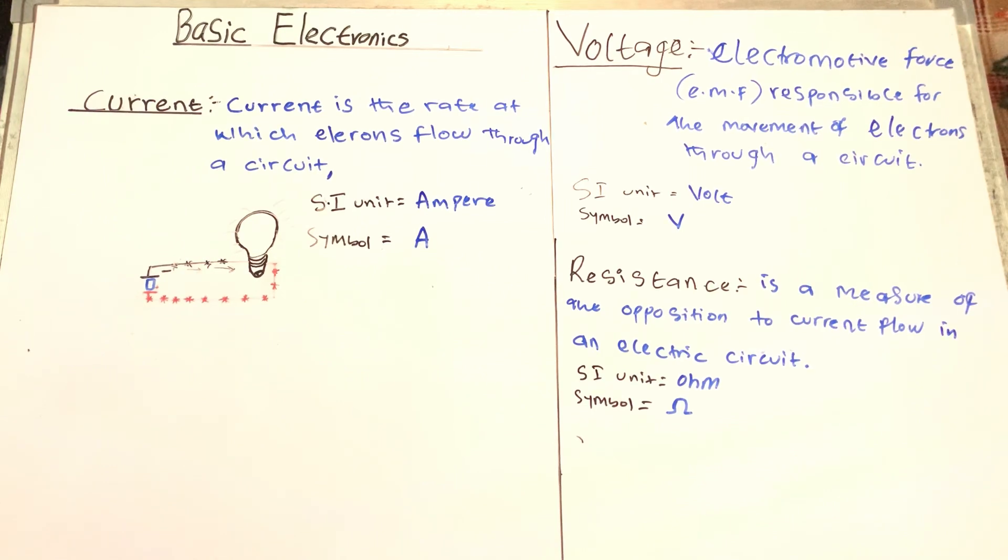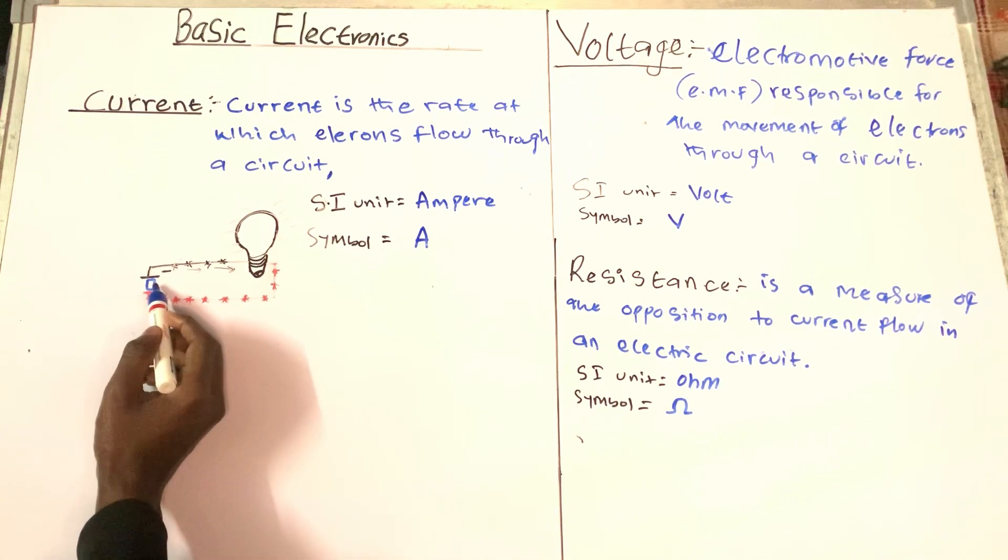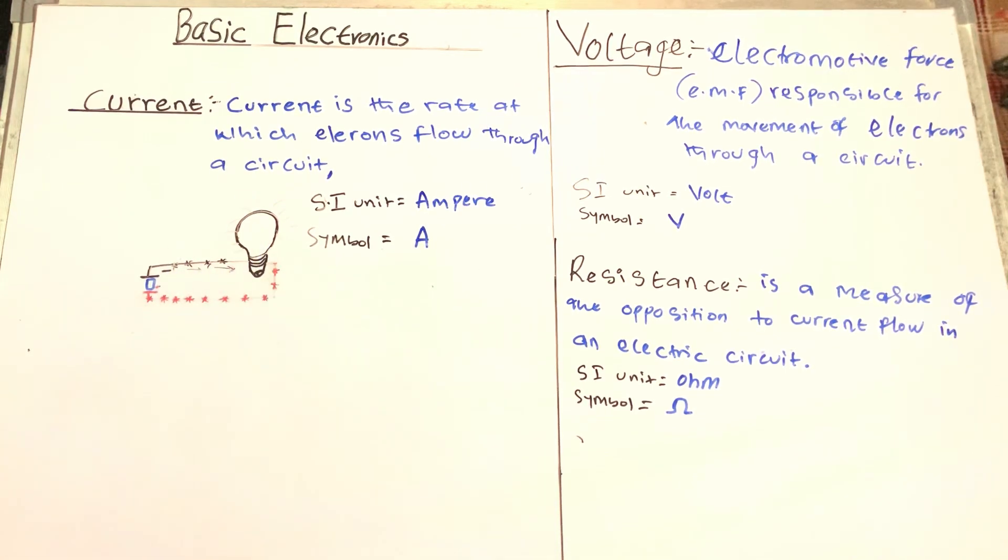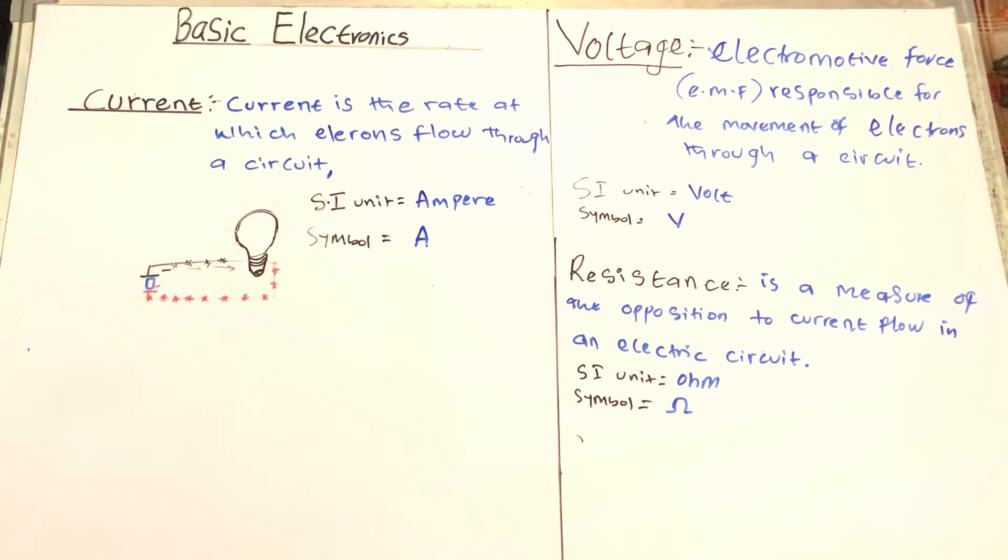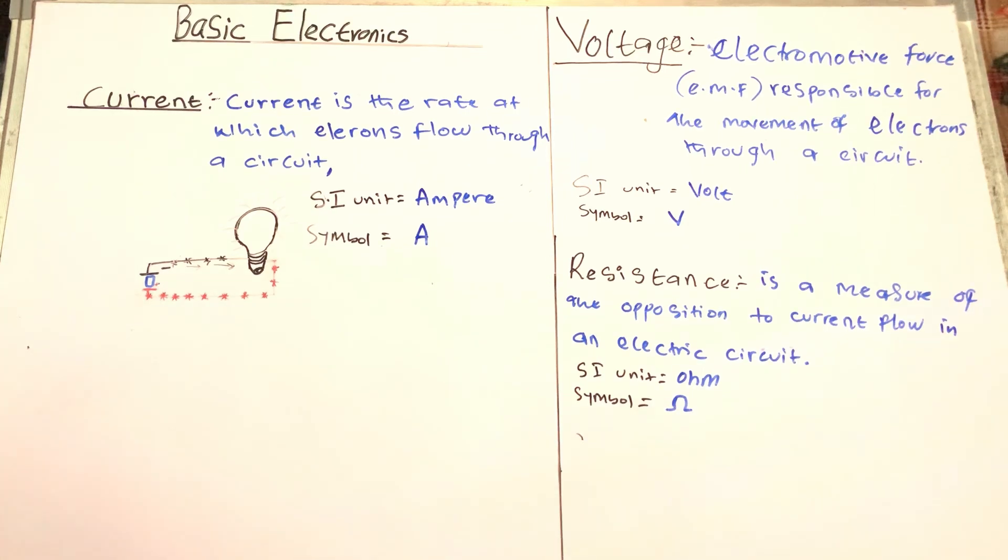Now current is basically those electrons that are moving from the active component, which is the battery, towards this bulb here as you can see from the circuit. So electric current is nothing but those charges that are moving to and fro from the battery or from the source to the components.